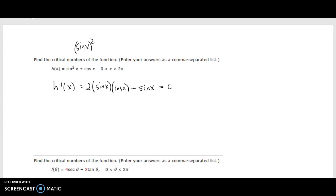Now when I set this to zero, the best way to handle this is to factor out my common factor, which is the sine function.